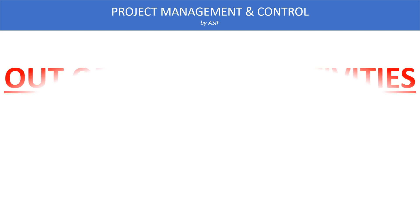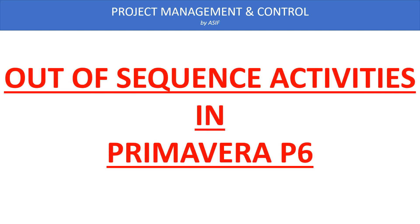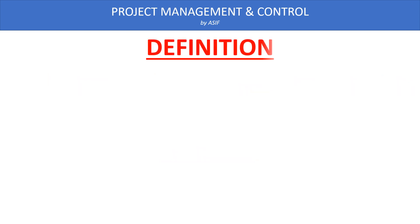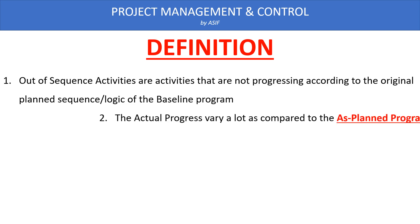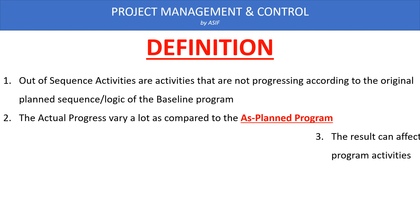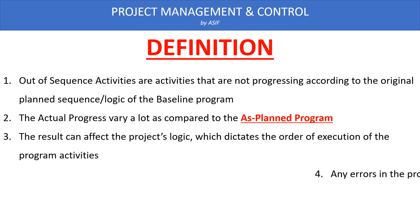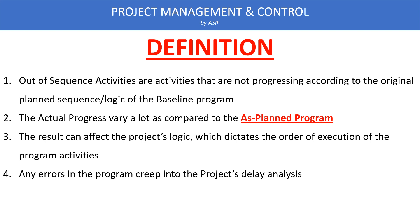This video is about auto-sequence activities in Primavera P6 software. Auto-sequence activities are those activities which are progressing irregularly or not as per the baseline plan. Activities that are not progressing as per the original plan and logic are called auto-sequence activities. Our actual progress varies a lot compared to the as-planned program, which affects the logic of future activities, network calculation, and project delay analysis.